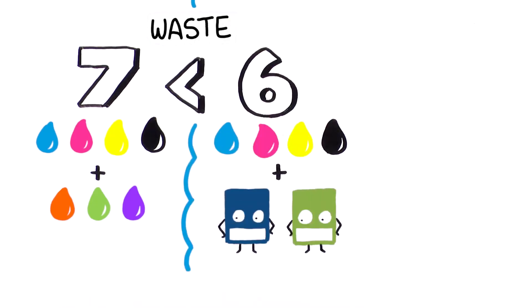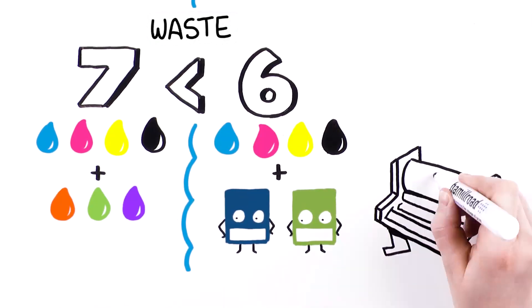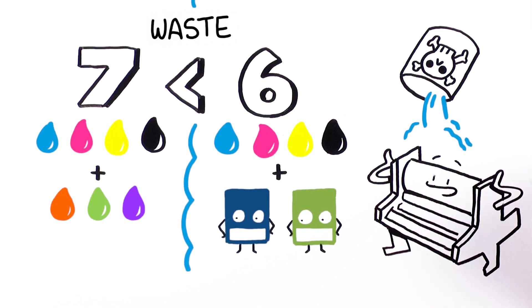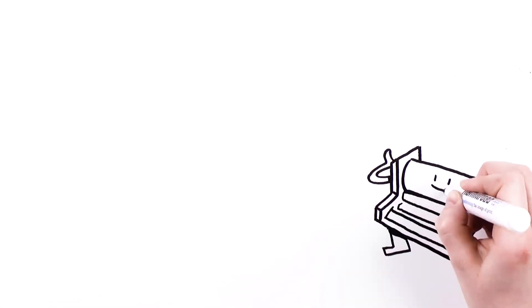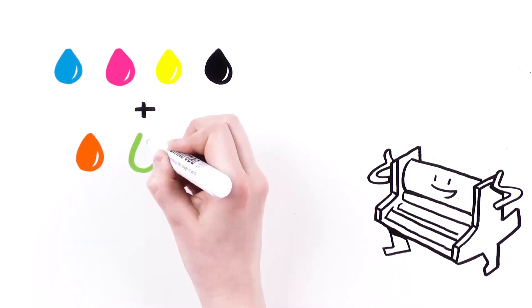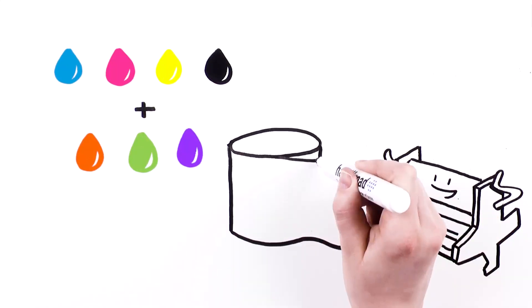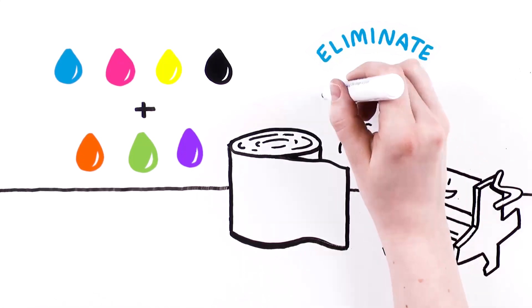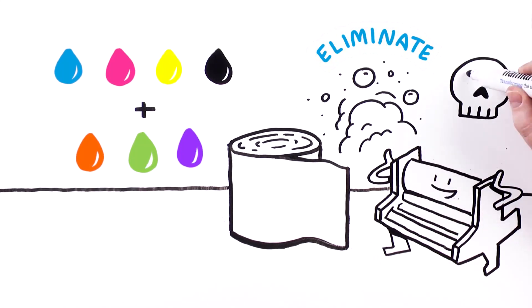The reality of print production is that more spot colours mean more press wash-ups, so more chemicals and solvents are required. By adopting a CMYK plus OGV environment, you can run job after job covering an expanded gamut, eliminating ink station wash-ups during production, thereby significantly reducing the amount of chemicals used in the process.